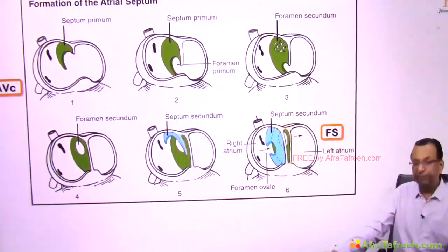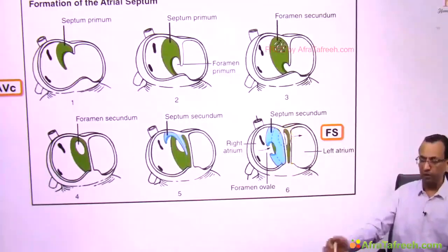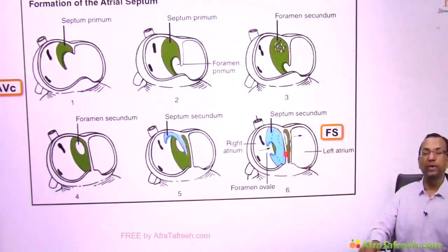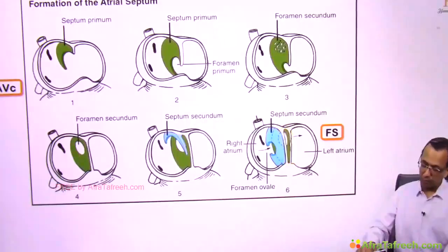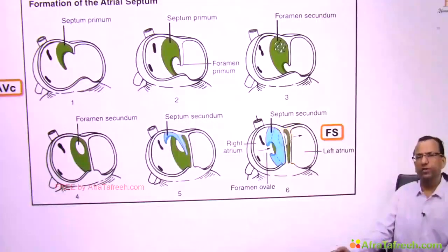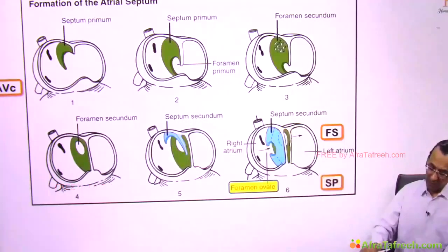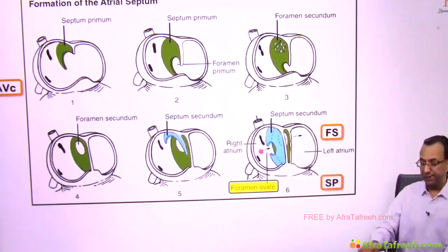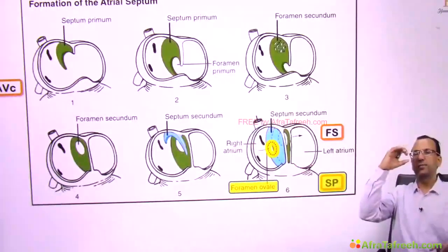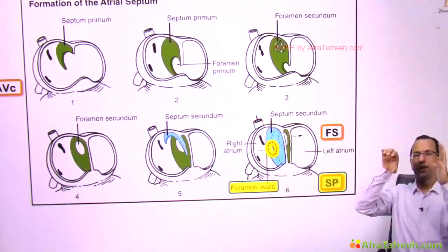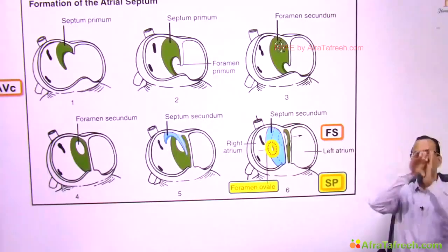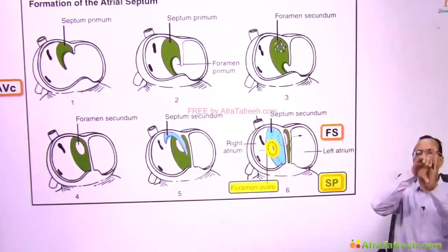After birth, the left atrium pressure becomes high, so the two septa will fuse, closing the two foramina. The foramen ovale will approximate to the left septum — the septum primum — and close. The foramen secundum is higher in level and fuses with the right septum, the septum secundum, and closes.